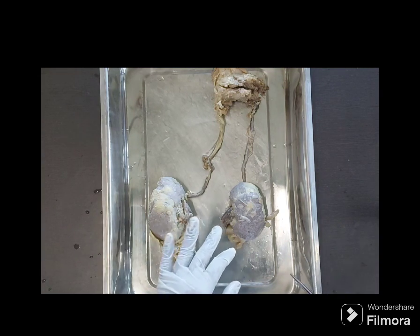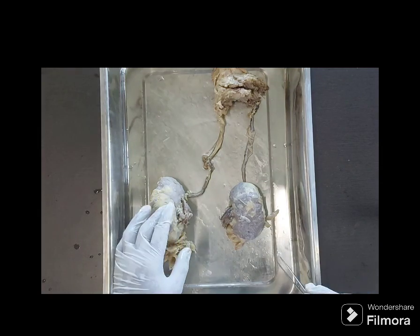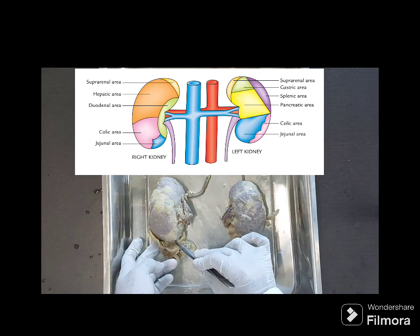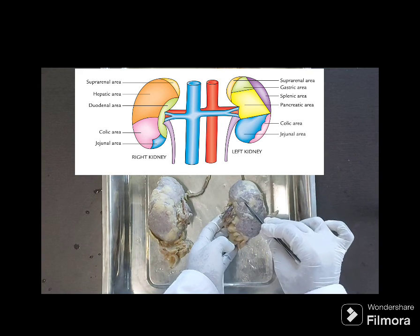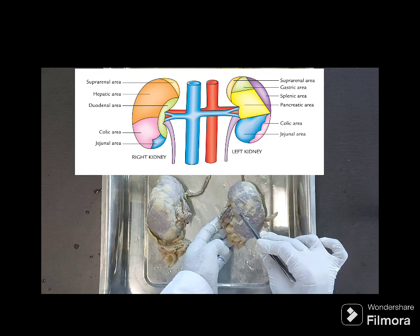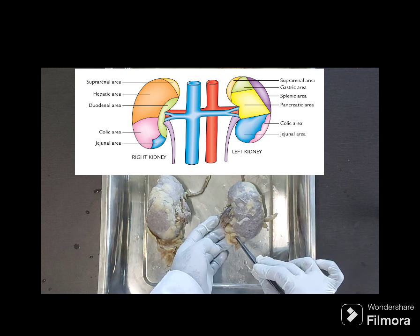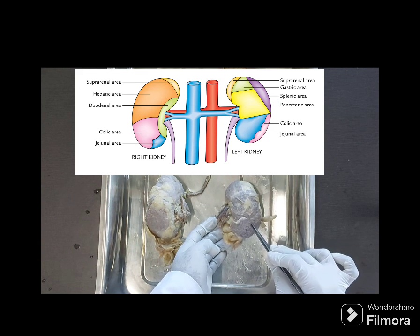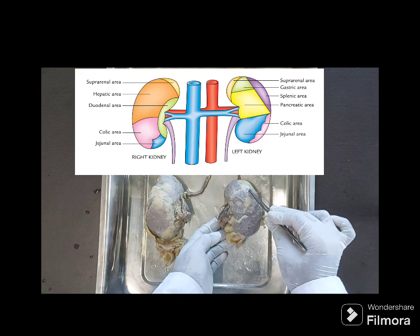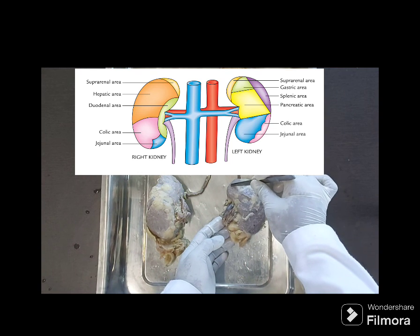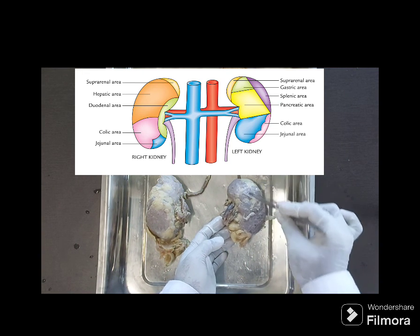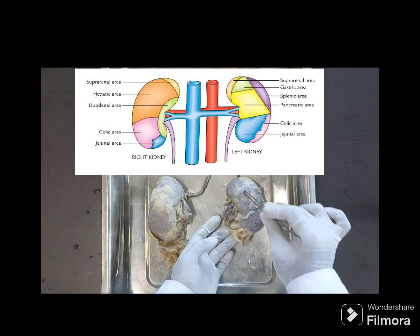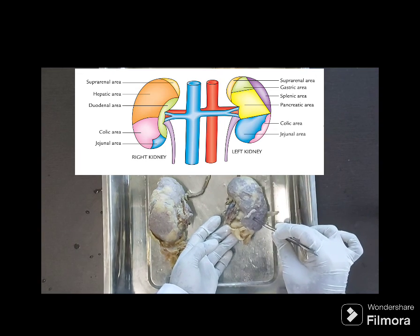Now let us learn the anterior relations of the kidneys. For the right kidney: at the upper part we have the right suprarenal gland. Near the hilum, this area is related to the duodenum. Below the suprarenal gland, this area is related to the liver. Below that is the colic area — the right colon — and near the lower pole at the medial most part there is the jejunum. So the anterior relations of the right kidney are: suprarenal gland, duodenum, liver, colon, and jejunum.